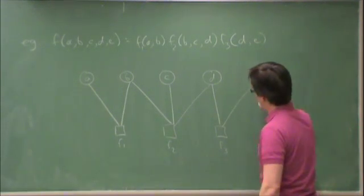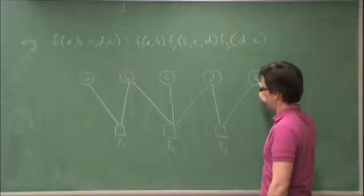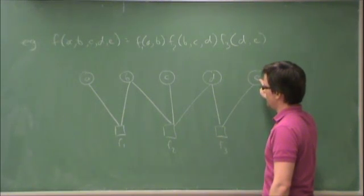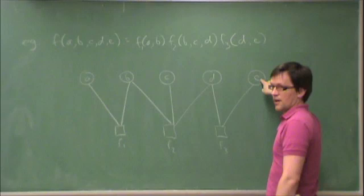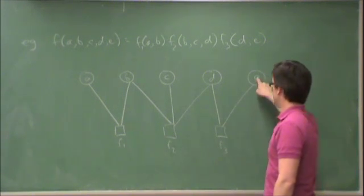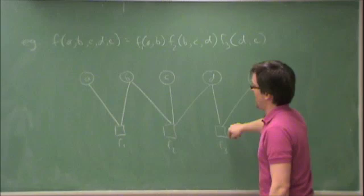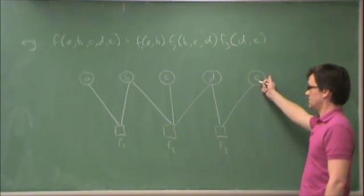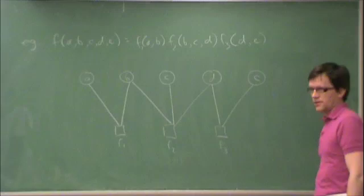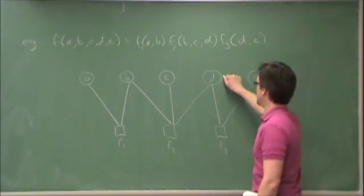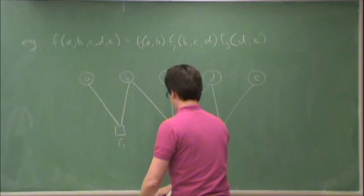Because, again, I can separate the nodes into two classes, this class and that class, the variables and the factors, and nodes in one class only connect to nodes in the other class. So in other words, there's no edges from variables to variables and there's no edges from factors to factors.